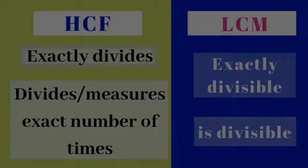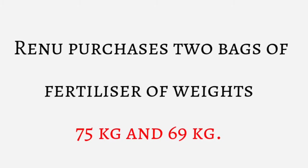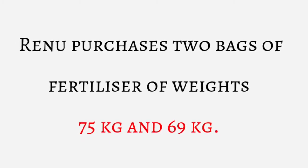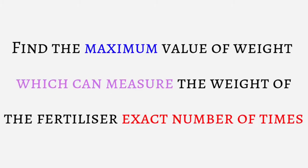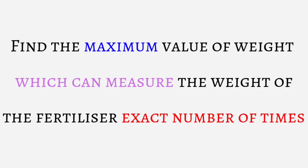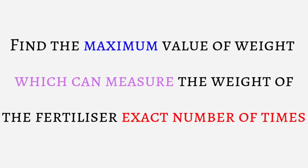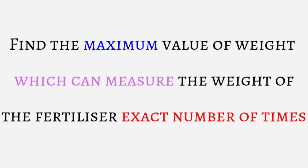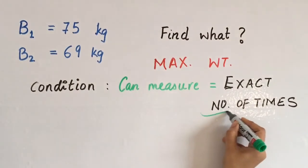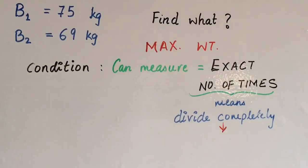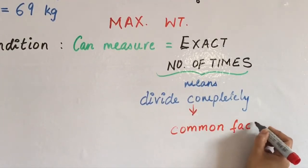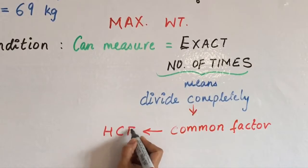Let us now solve the questions. First question is, Renu purchases 2 bags of fertilizer which weigh 75 kg and 69 kg. Find the maximum value of weight. Condition is it can measure the weight of the fertilizer exact number of times. That is, this weight will completely divide 75 and 69 kg. That means what you have to find is the common factor of 75 and 69, that is HCF.